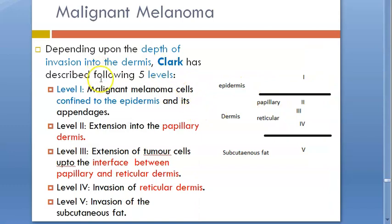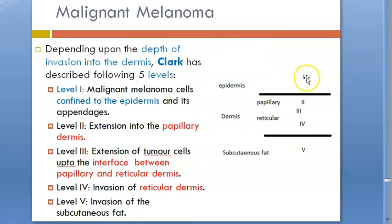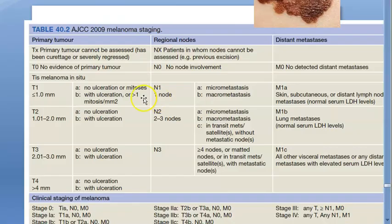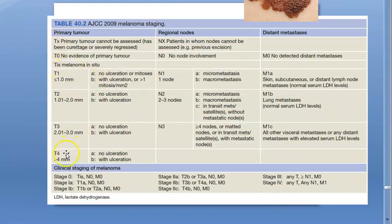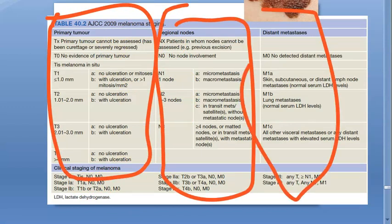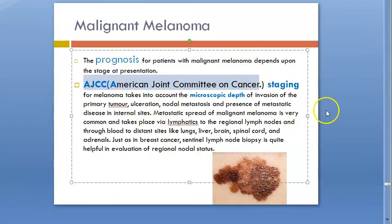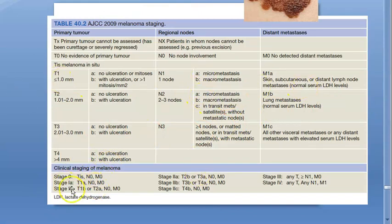So you have also looked at staging. Clark levels: level 1 is in the epidermis, level 2 is in the papillary dermis, level 3 is between papillary and reticular dermis, level 4 is invasion of the reticular dermis, and level 5 is invasion of subcutaneous fat. Then there is the AJCC — American Joint Committee on Cancer Staging — which uses TNM staging: tumor, lymph node, and metastasis. Based on the TNM you assign the stage.